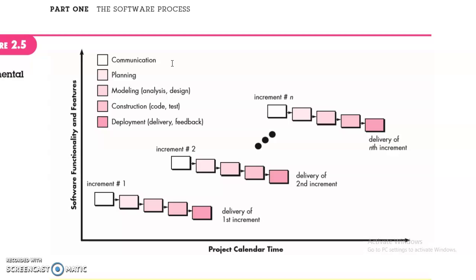In other words, we also have to look at the incremental process model using linear and parallel — crossroads flowing — where we use the same framework activities.